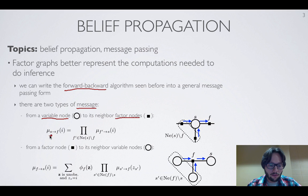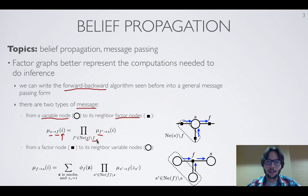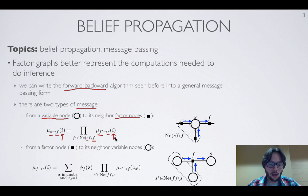The message from a variable node S to a factor node F, when node S takes value i, is just the product of the messages that all other factors F' connected to S — and that are not F — have sent to S, where we assume node S is taking value i. So we take all messages sent to S from other factors and multiply them together; that becomes the message S sends to F.